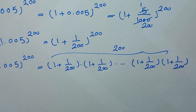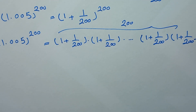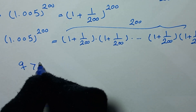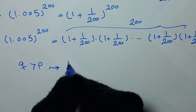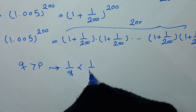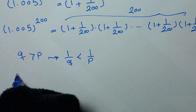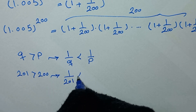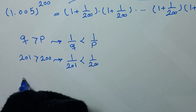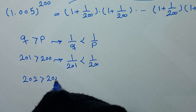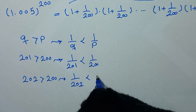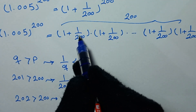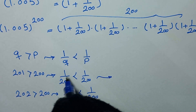Now, as you know, if q is greater than p, then 1/q is less than 1/p. For example, 201 > 200, so 1/201 < 1/200. Likewise, 202 > 200, so 1/202 < 1/200. Adding 1 to both sides: (1 + 1/201) < (1 + 1/200), and (1 + 1/202) < (1 + 1/200).